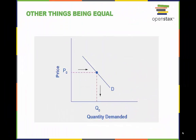The demand curve can be used to identify how much consumers would buy at any given price. If the price changes, then the quantity demanded changes but remains on the same demand curve. This simplified model illustrates an important assumption made in economic theories and models: Ceteris Paribus. This Latin phrase means 'other things being equal.' In the supply and demand models, we hold all other variables equal and look only at the factor of price.